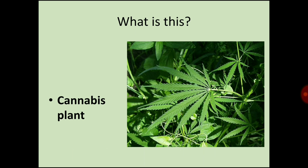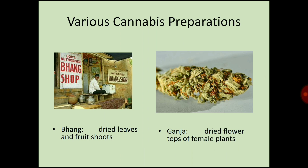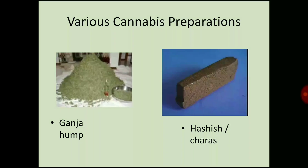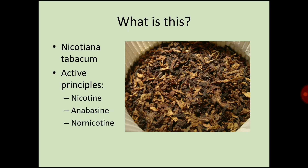The next plant is the cannabis plant. You can see various cannabis preparations in this picture. Bhang consists of dried leaves and fruit shoots. Ganja consists of dried flower tops of female plants. You can see ganja and hashish (charas) in this picture. The next image is Nicotiana tabacum. The active principles of Nicotiana tabacum are nicotine, anabasine, and nornicotine.